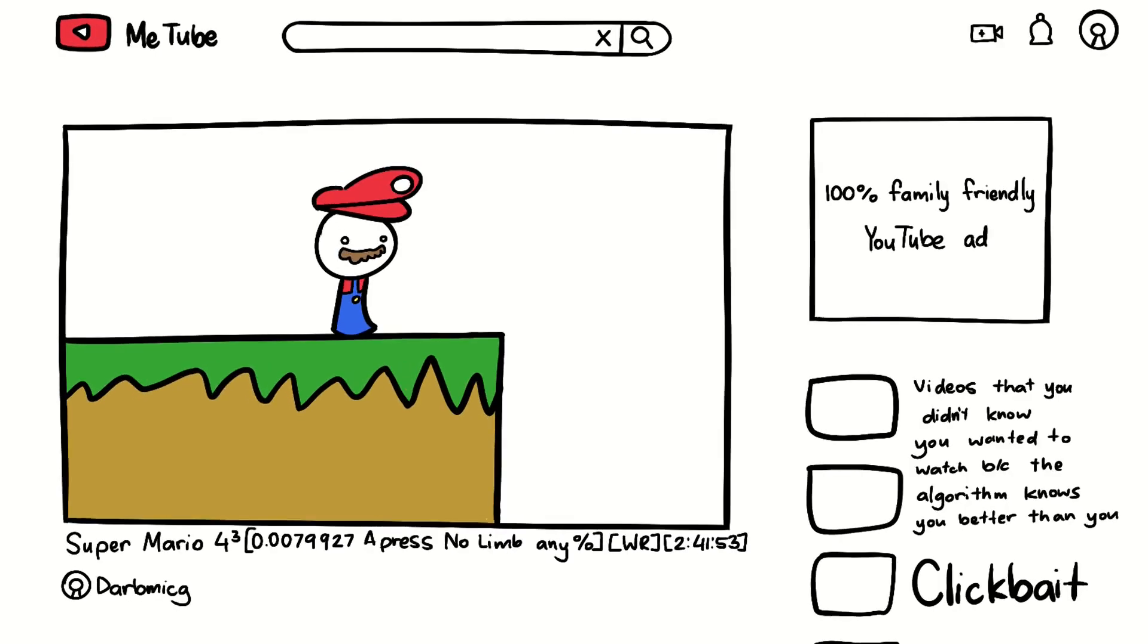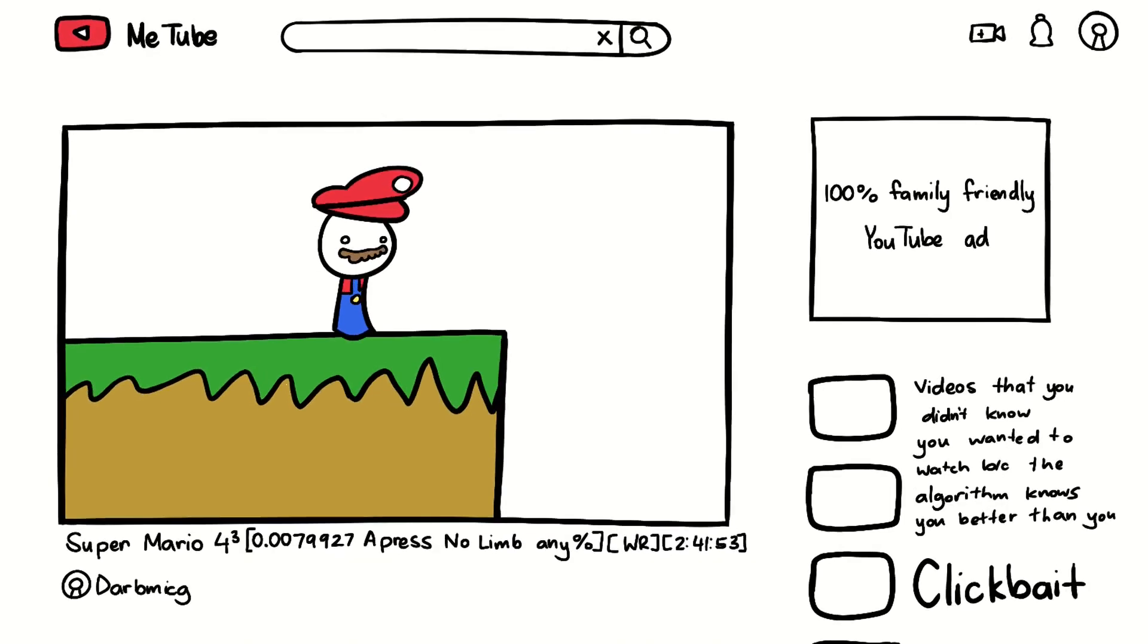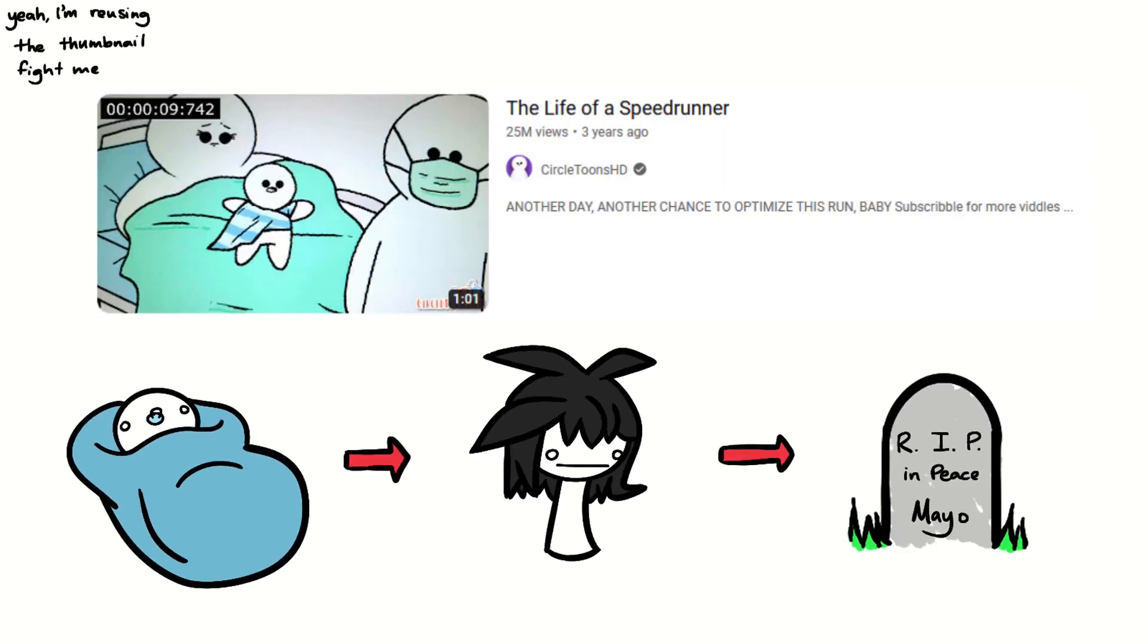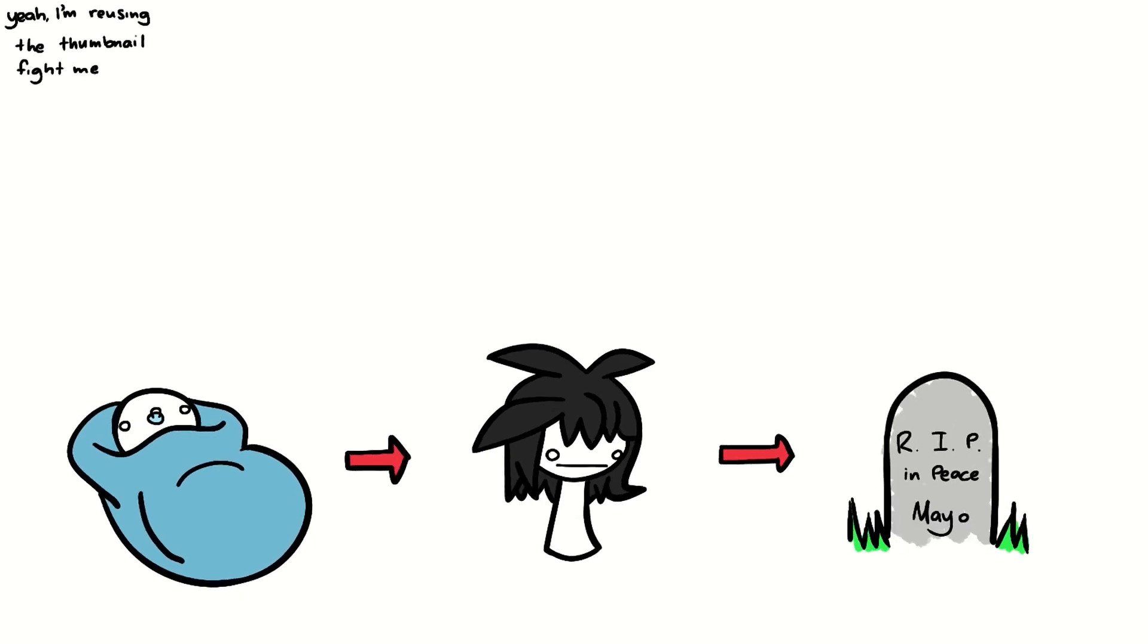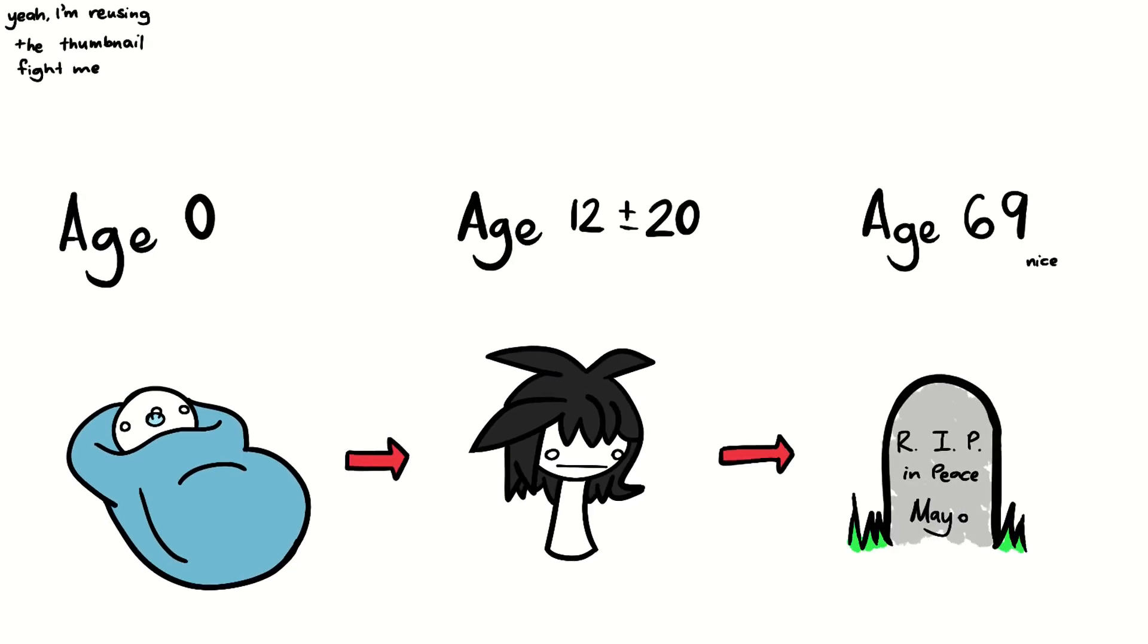People can speedrun basically anything these days, so what about life? And I don't mean any percent where you can use questionable methods to reach an end screen. I'm talking about 100% completion, where you live a long and fulfilling life.